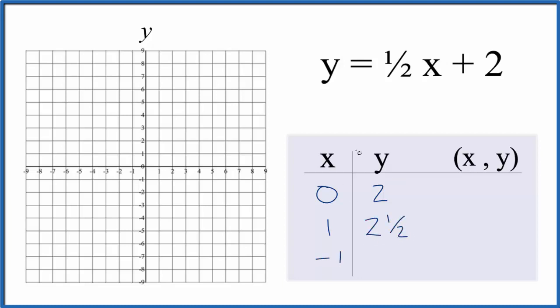Finally, let's put a negative one in. So one-half times negative one, that's negative one-half, plus two, that gives us one and a half.